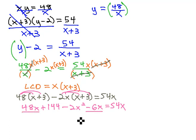Combining like terms, we'll also put things in order. Negative two x squared plus forty-eight minus six is forty-two x, plus 144, equals fifty-four x.